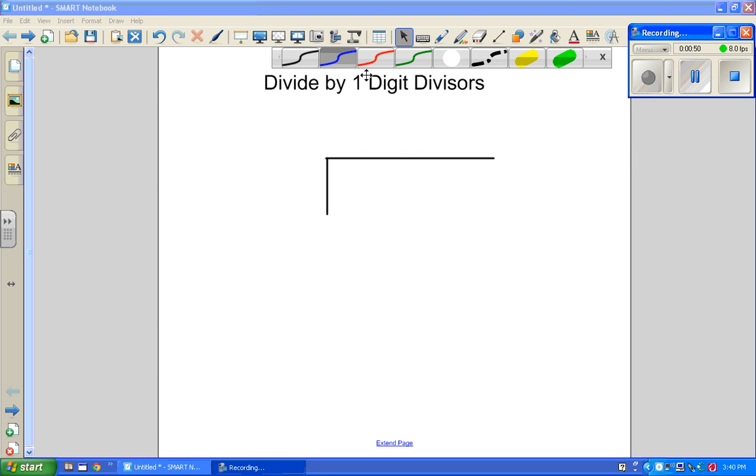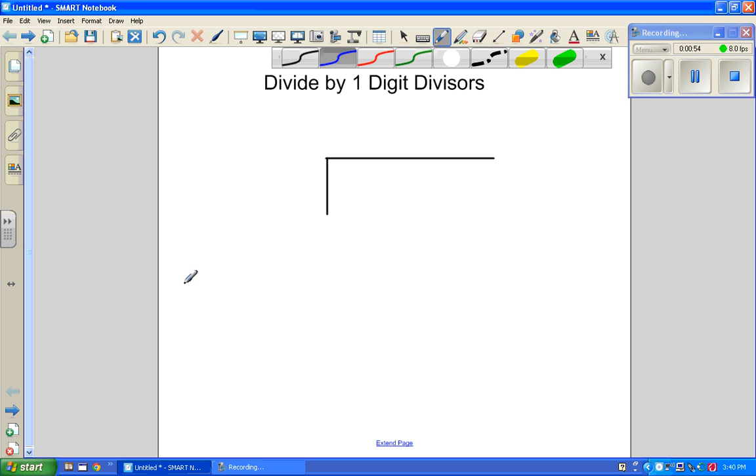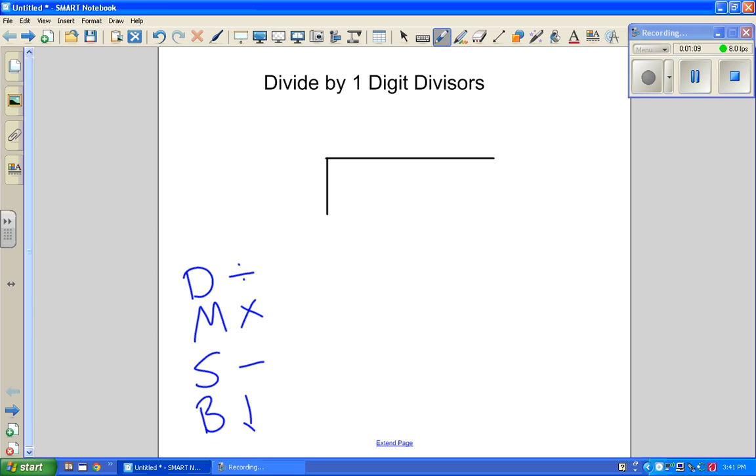In division, there's no simple way. As I've looked it up, I found the easiest way to do a step-by-step is to go with D, M, S, B. D is for divide, M is for multiply, S is subtract, and B is bring down.